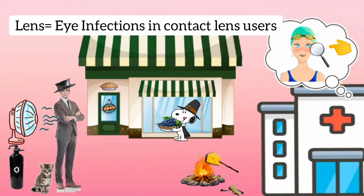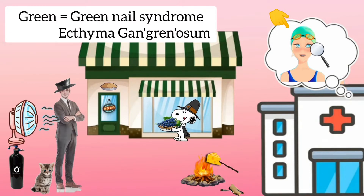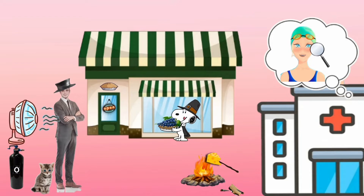The lens used for checkup implies that Pseudomonas causes contact lens infections. The swimmer is wearing a green cap — the green color reminds us of green nail syndrome and ecthyma gangrenosum.